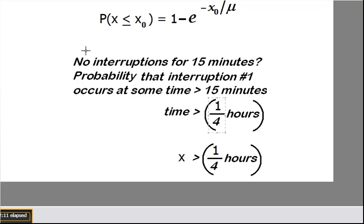So here I've repeated the formula and I'm repeating the problem. No interruptions for 15 minutes. So the probability that we're interested in is that interruption number one occurs at some time greater than 15 minutes.